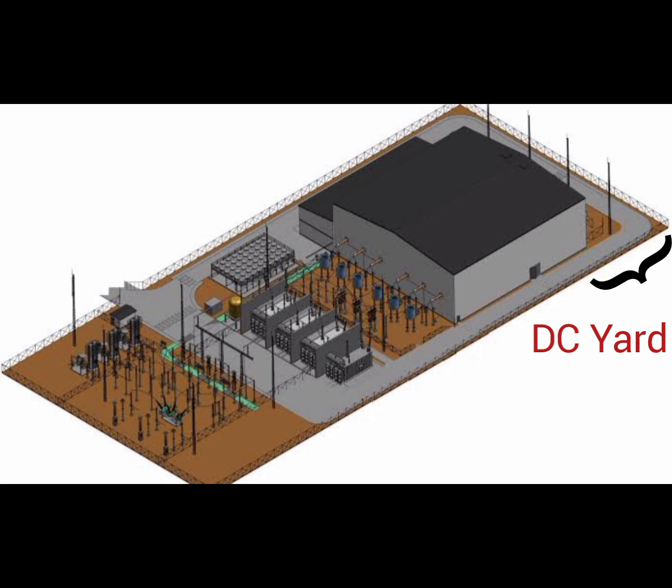DC yard, located on the other side of the valve halls, includes DC switching equipment such as circuit breakers and disconnectors, and filtering equipment such as DC filters and smoothing reactors. Its purpose is to connect the HVDC station to the DC transmission line and provide switching and filtering capabilities for the DC output.